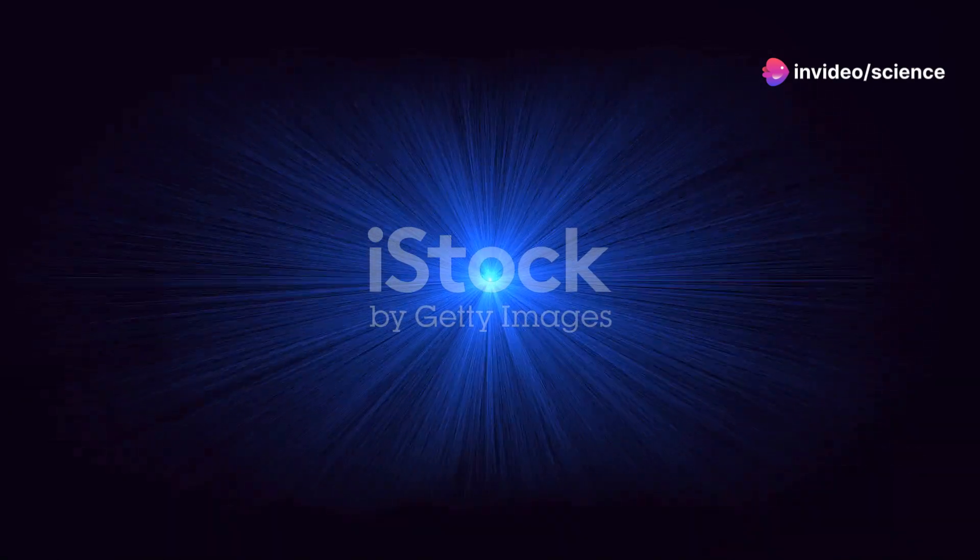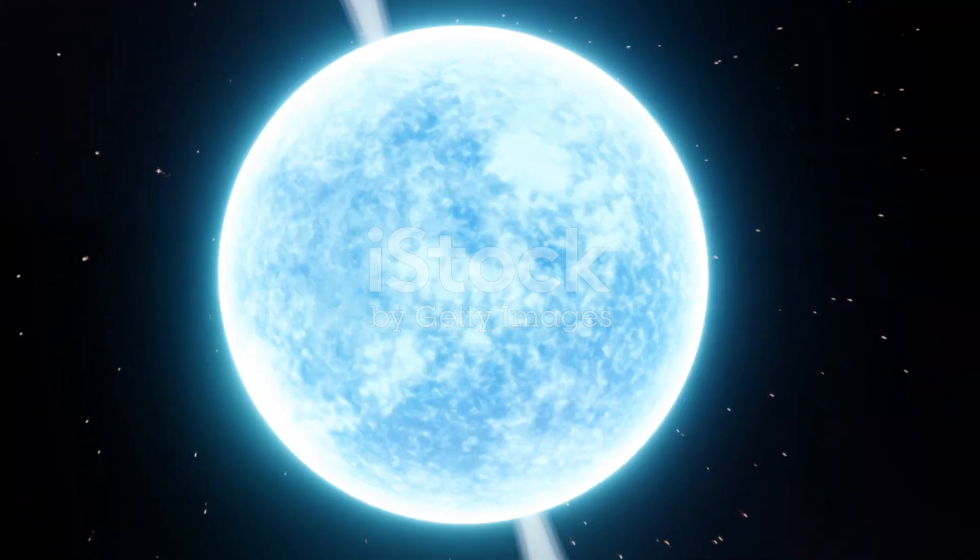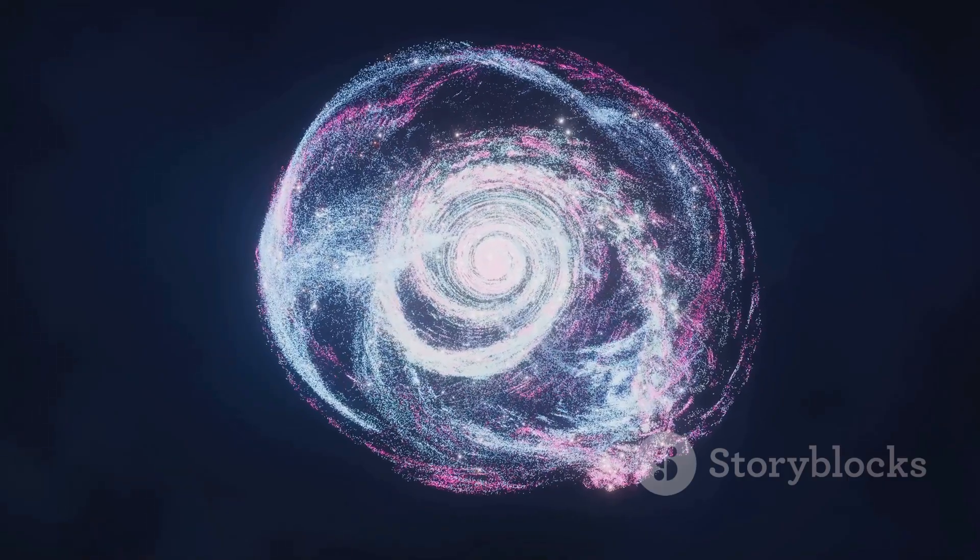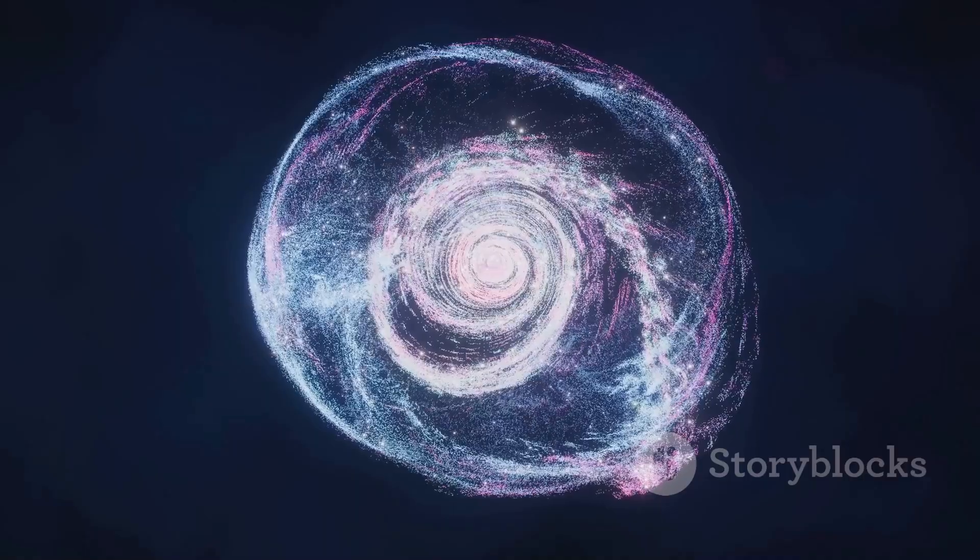But it's not just heat that's making these stars blue. Neutron stars are also extraordinarily dense. Picture cramming a mountain into a thimble. That's the kind of density we're talking about.